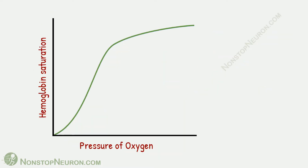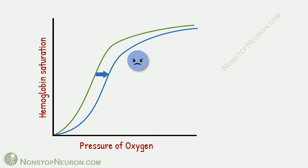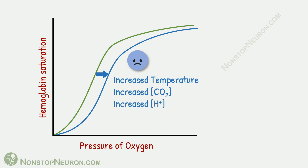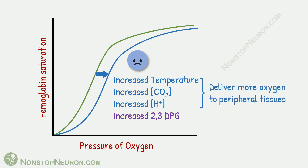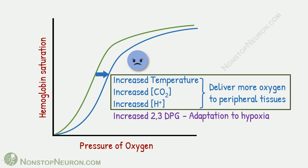Now let's see what these factors actually are. First, factors that shift the curve to the right: these are increased temperature, increased partial pressure of carbon dioxide, increased hydrogen ion concentration, and 2,3-diphosphoglycerate. All these factors decrease affinity of hemoglobin. The first three factors help deliver more oxygen to peripheral tissues, and 2,3-DPG is important in adaptation to hypoxia.